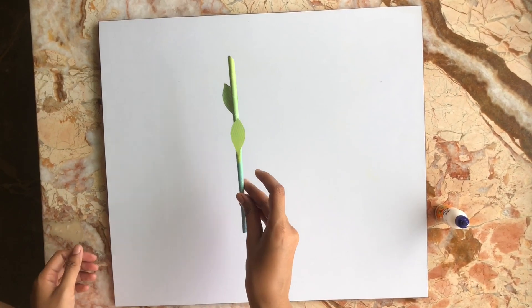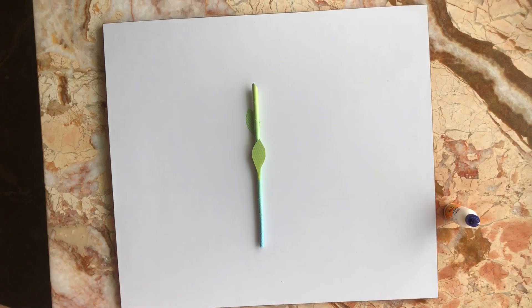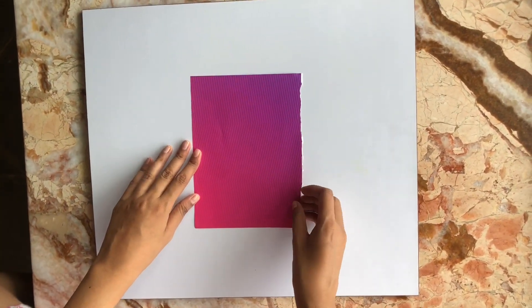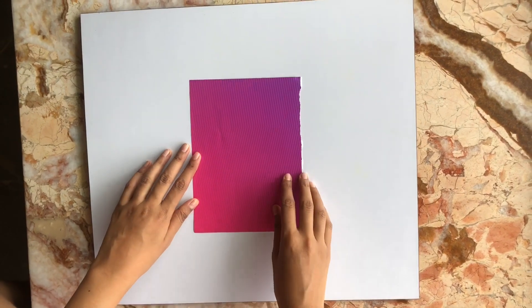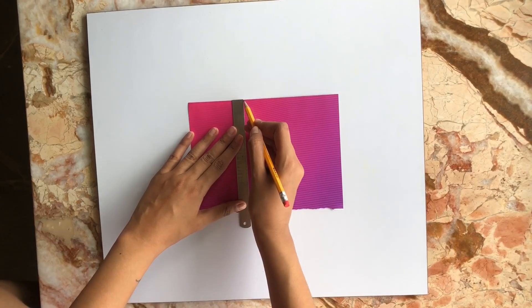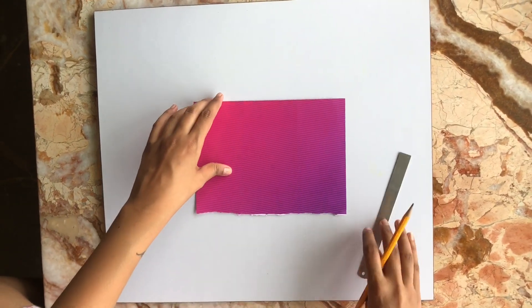Leave this aside to dry. We now take the other color of paper for the flower part of our rose, and at approximately one third of the paper we can draw a line and cut it out.